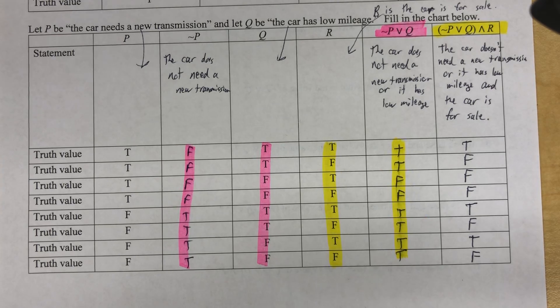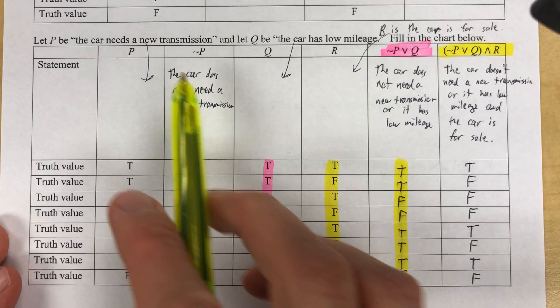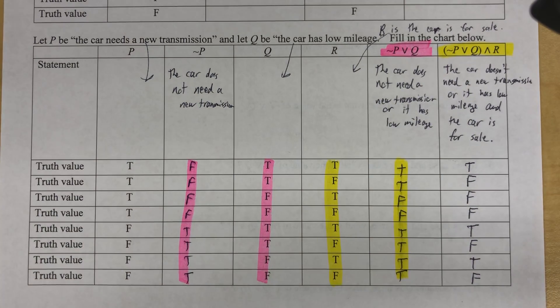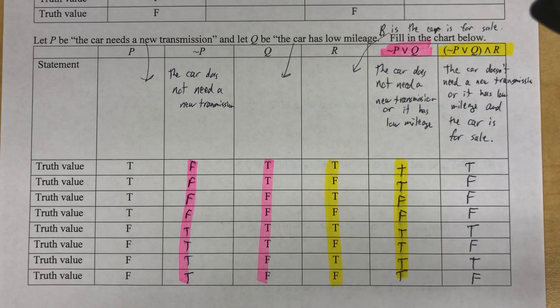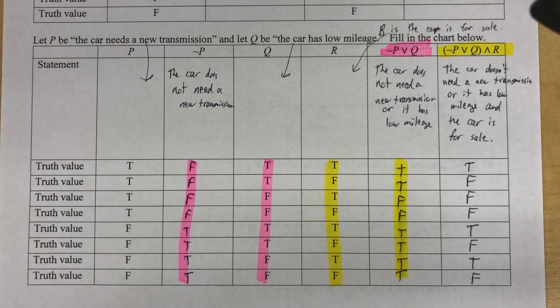So in any given configuration of falseness and trueness concerning my car's transmission, mileage, and it being for sale, we have worked out every possibility of how this could turn out. This comes in really handy in, well, a lot of things, Excel spreadsheets. When you are determining if this true, this true, then you have to do this and that sort of thing, conditional formatting. Okay. We're going to do a few more problems in just a minute in the next video.